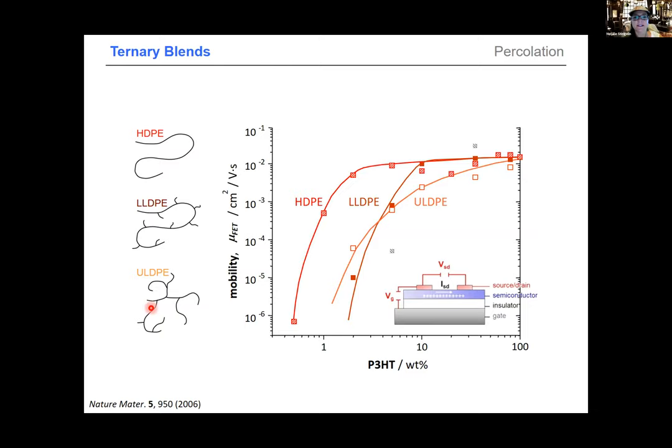Those who know me know I like polyethylene, the commodity polymer. Very early on with Christian Müller, we made blends with semiconducting polymers such as P3HT. We used the semiconductor and added different types of polyethylene from high density to ultra low density, varying degree of crystallinity. We used a transistor, a three-terminal device where we manipulate charge carriers in the blue semiconducting layer via gate bias.